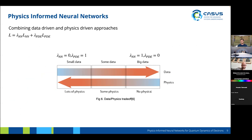PINNs are also flexible in that we can incorporate data we already have. We can create new loss functions that combine both normal loss — comparing ground truth and predictions — and the PDE loss, which measures how well the solution fits the PDE. This is especially useful for physics problems where we might not have enough data but we have some underlying theory, so we can fit noisy data to that theory to get better approximations.